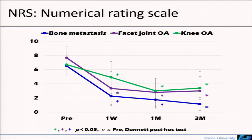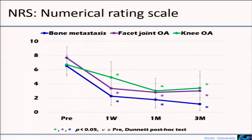The NRS score significantly decreased from one week to three months after treatment compared with before treatment in all groups. In the bone metastasis group, NRS score gradually decreased during the three months (blue line) compared with other groups. It was suggested that long-term pain reducing effects were not only caused by protein degeneration of irritated nerve fibers, but also by anti-tumor effect and bone formation.